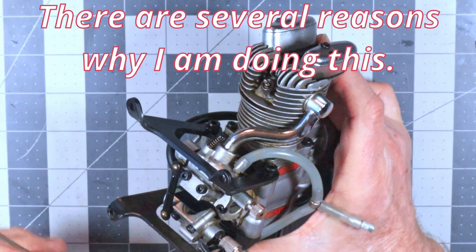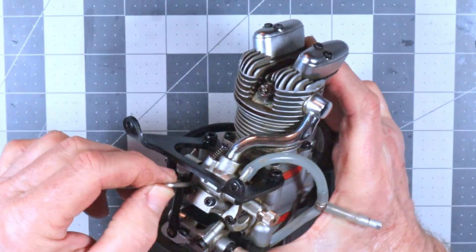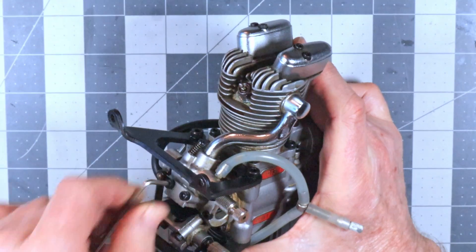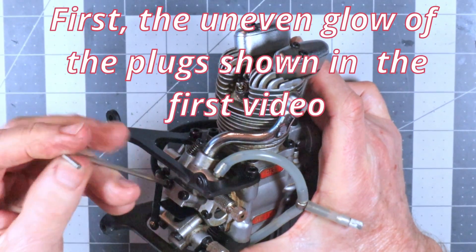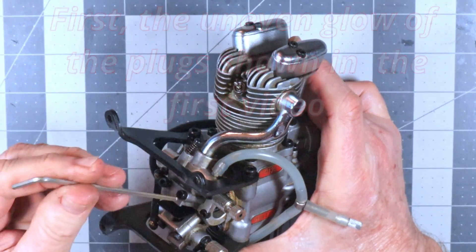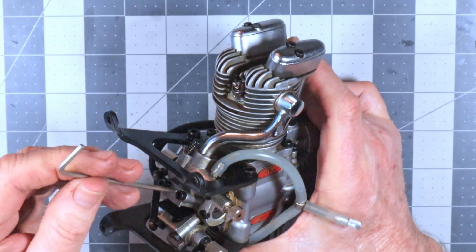Now, whether I can actually remove these carbs without completely disassembling a lot of the engine is a question. I'm not sure. I have not done this in a long time. I know I've got an intake tube here.